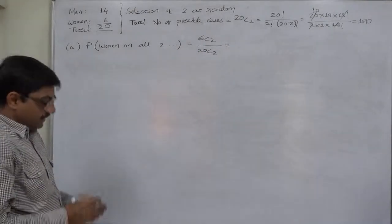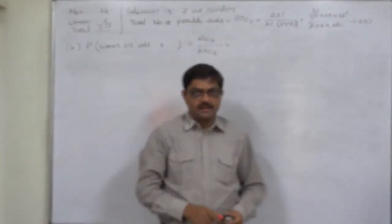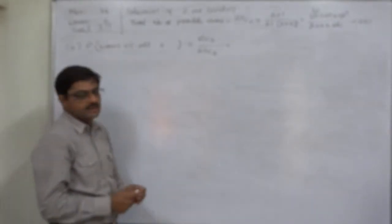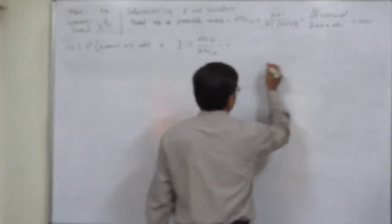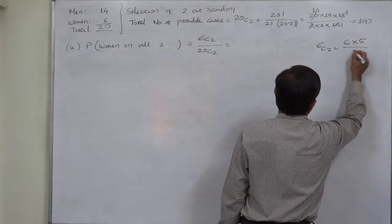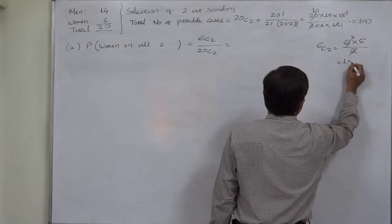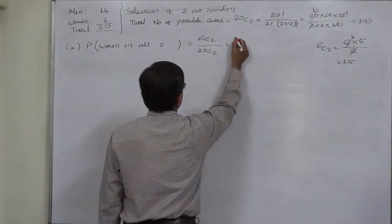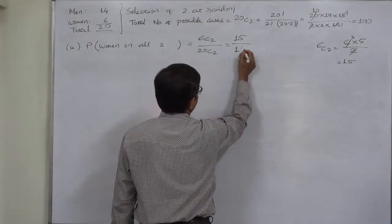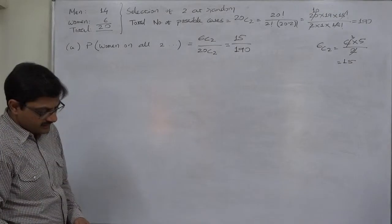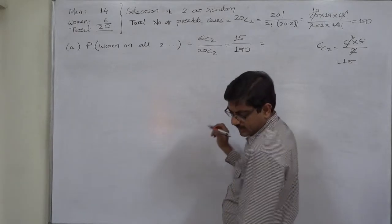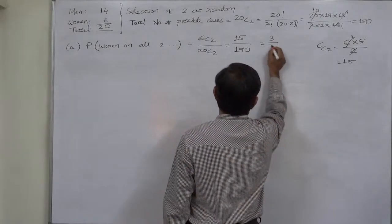Now we know that 6C2, what is the value of nC2? That is n into n minus 1 divided by 2. So 6C2 means 6 into 6 minus 1, that is 5 divided by 2. That means 15. So the value of 6C2 is 15, and we know that value of 20C2 is 190. So it is 15 upon 190. Let us divide both by 5. It comes to 3 by 38.